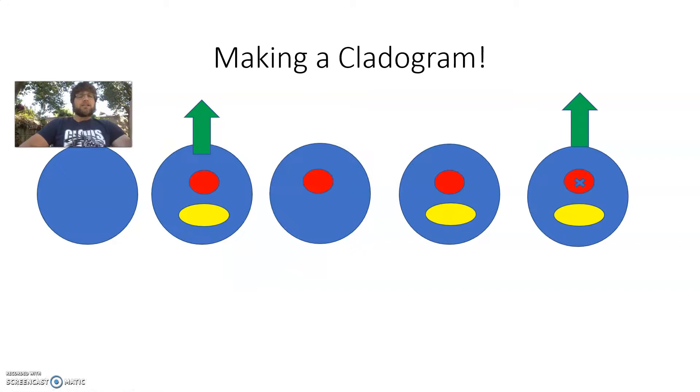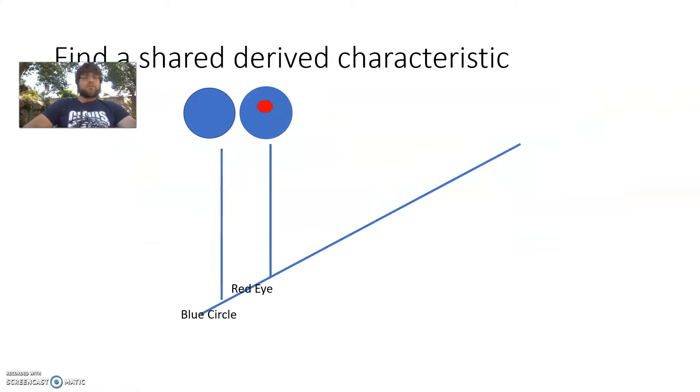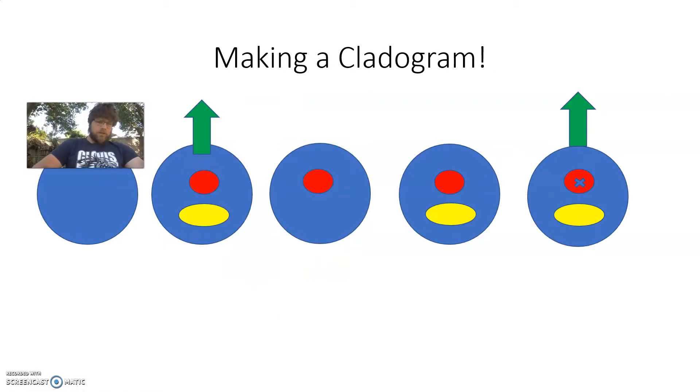Now, next, I look at the remaining four. And I want to find a shared-derived characteristic. And in this case, the red eyes are shared by all four. So it's likely that that was the next shared-derived characteristic to evolve in my cladogram. So this population evolved the red eye. And it speciated one population, formed modern-day red eye. And then the other population formed the other three species.